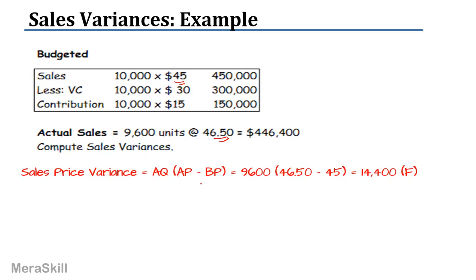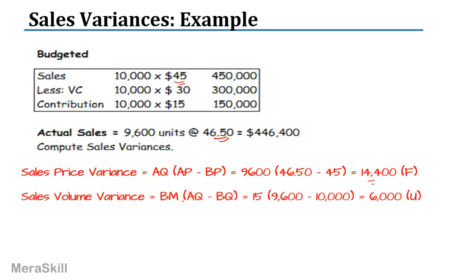The price variance is the difference in price: 46.50 minus 45, into actual quantity of 9,600, giving 14,400 favorable. The volume variance — or quantity variance, since there is only one product — is the difference in quantity: actual quantity minus budgeted quantity into the budgeted margin of 15. That is 9,600 minus 10,000 into 15 = 6,000 unfavorable, because we could not meet the budgeted volume.